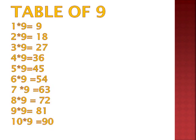Now the table of 9. 1 nine is 9, 2 nines are 18, 3 nines are 27, 4 nines are 36, 5 nines are 45, 6 nines are 54, 7 nines are 63, 8 nines are 72, 9 nines are 81, 10 nines are 90.